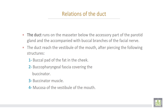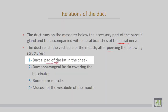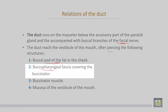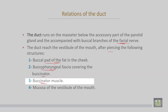Relations of the parotid duct: the duct runs on the masseter below the accessory part of the parotid gland, accompanied by the buccal branches of the facial nerve. The duct reaches the vestibule of the mouth after piercing the following structures: the buccal pad of fat in the cheek, then the buccopharyngeal fascia covering the buccinator muscle, then the buccinator muscle itself, and finally the mucosa of the vestibule of the mouth, opening opposite the upper second molar tooth.